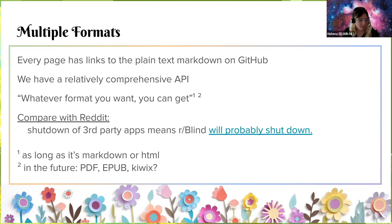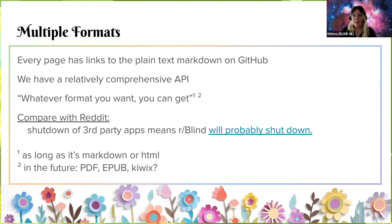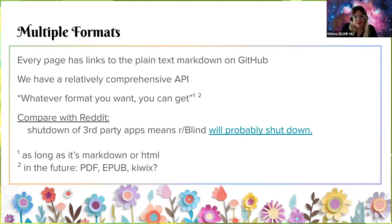We also link to the markdown directly. We try to make all of our content available on an API so that if there's a different format that would be better for someone, they should have access to that data in a machine-readable format that they can put into a better format for themselves. The comparison here is with Reddit, who are currently shutting down third-party applications by increasing API fees. This means the blind subreddit, which was heavily reliant on third-party applications because Reddit's own apps were so terrible for accessibility, has been badly affected. So when we make training materials, we're really trying to think about how we can make them accessible in whatever format works best for people.